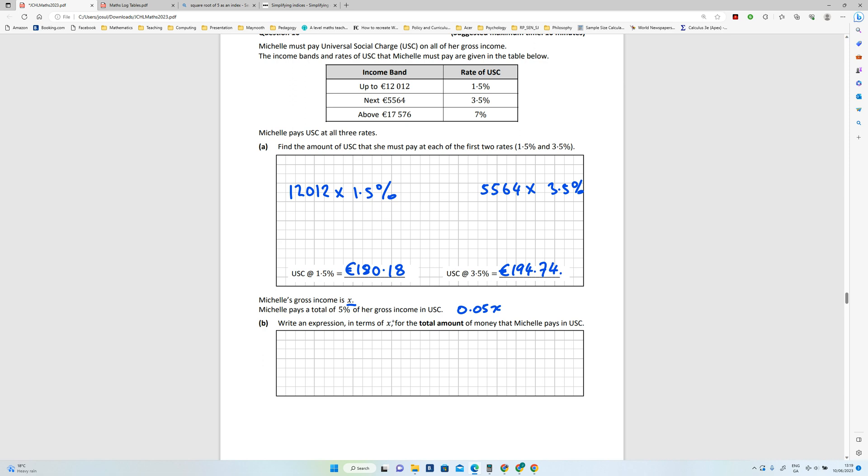So write an expression in terms of X for the total amount of money that she pays. Well, just as I did there, the first part is going to be 0.05X. So we know we're going to have to have these two in it, the 180 and the 194 that we just calculated in the previous step. And the last one though, whatever is left, you must pay seven percent on it.